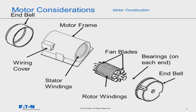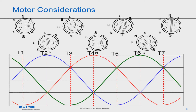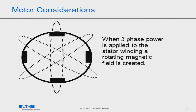Now for the basics, everybody knows how an electric motor is built. We have our motor frame, some wiring covers, stator, rotor, and belts. How does the motor work? When we're passing the three-phase current through the windings, we will have a magnetic field that will push the rotor, causing it to rotate and create motion. Three-phase applied to the stator winding creates a rotating magnetic field.